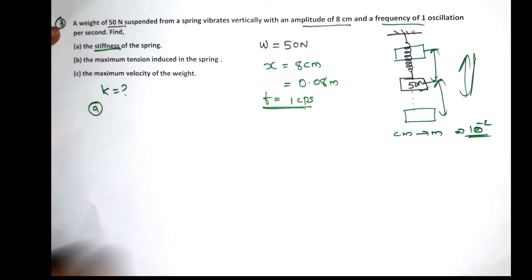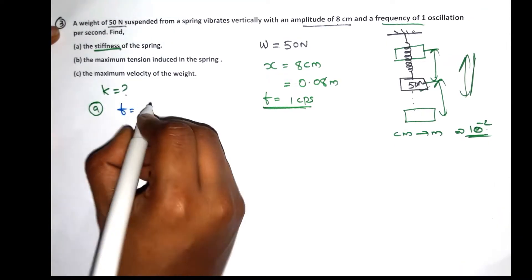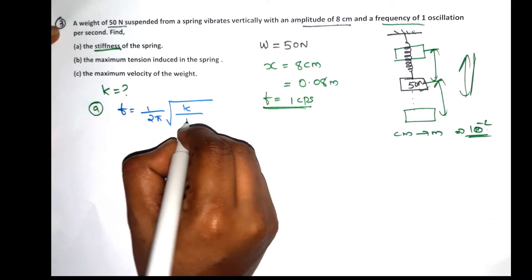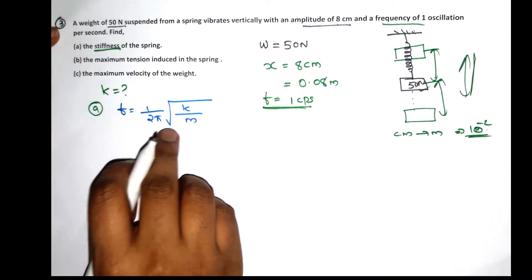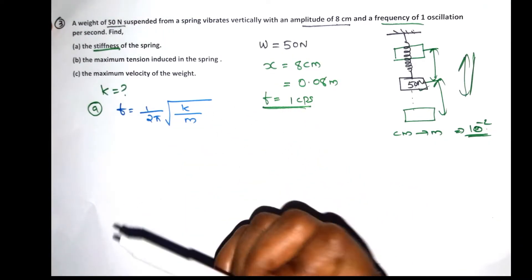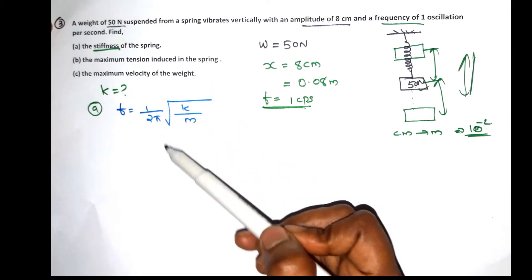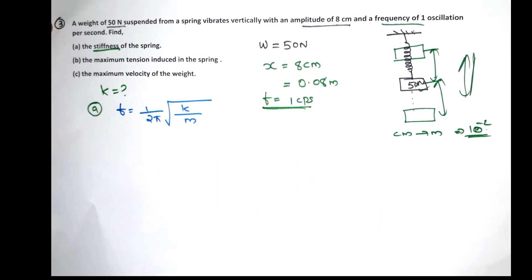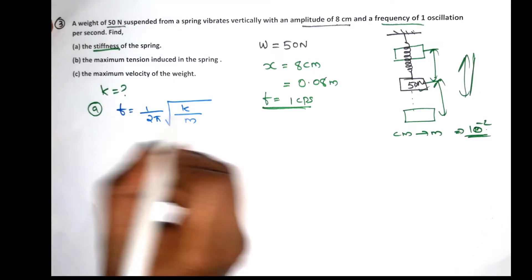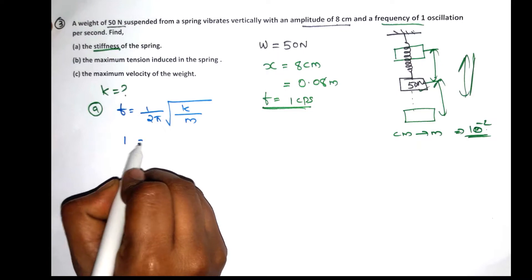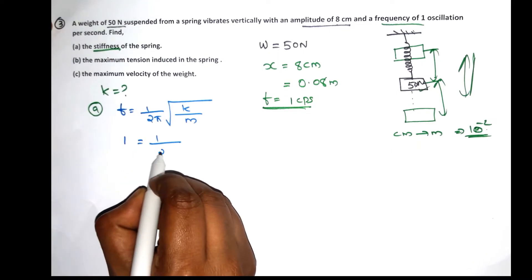To find stiffness, we use the frequency equation: f is equal to 1 divided by 2π into the square root of k divided by m. This equation is very important — learn it by heart. Substituting, we have f equals 1, so 1 equals 1 divided by 2π into the square root of k divided by m.